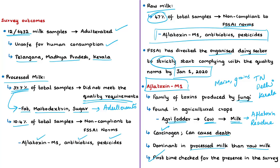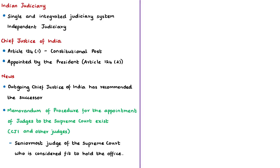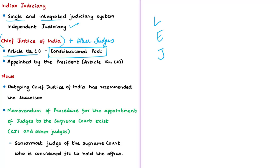Moving on to the next news article, which is about the recommendation of the new Chief Justice of India by the present Chief Justice. There are three organs of government: legislature, executive, and judiciary. The Indian judiciary is a single and integrated judiciary system that is independent of the other organs of government. According to Article 124, Clause (1) of the Indian Constitution, there shall be a Supreme Court of India consisting of a Chief Justice of India and other judges. The post of Chief Justice of India is a constitutional post, and the CJI and judges of the Supreme Court are appointed by the President under Article 124, Clause (2).